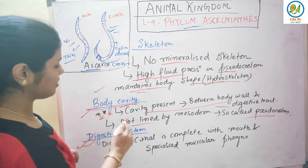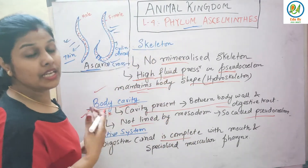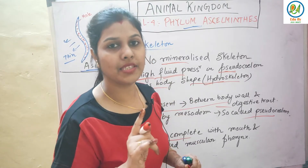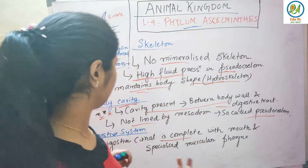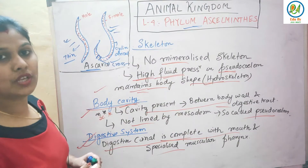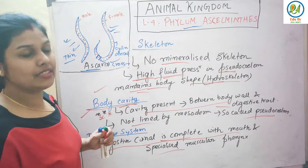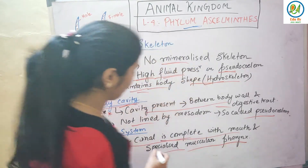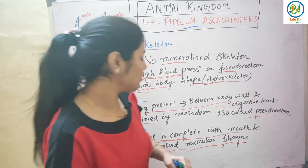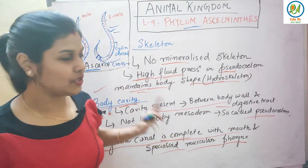Next is the digestive system. The digestive canal is complete — they have two openings. Unlike Platyhelminthes which had an incomplete digestive system with no anus, Aschelminthes have both a mouth and an anus. An important new feature is the specialized muscular pharynx — very important from an exam point of view.